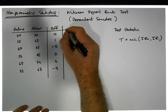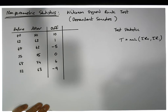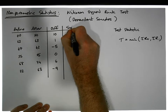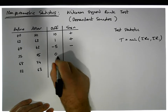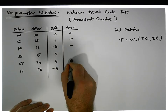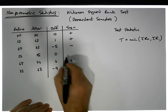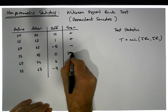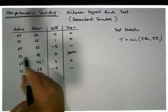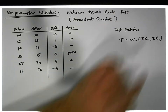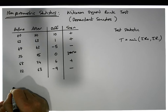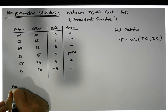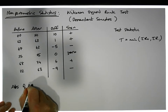Each difference has a particular sign associated with it. You can see that some are positive, one is negative, and one is zero. Because there's no difference where zero occurs, we're actually going to exclude the zeros in the calculation of this test statistic.